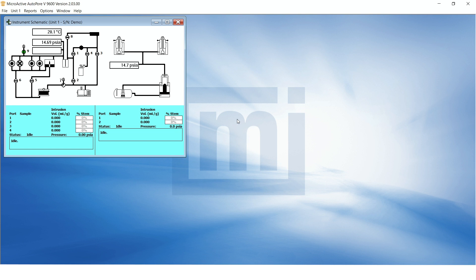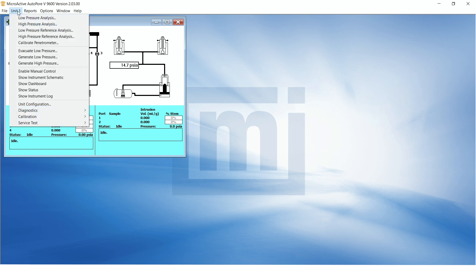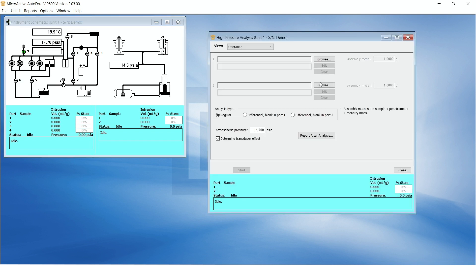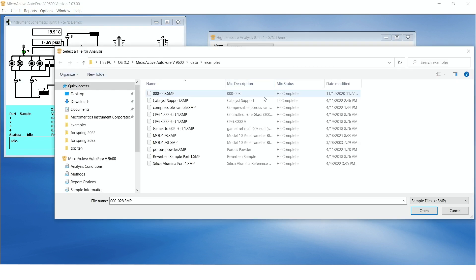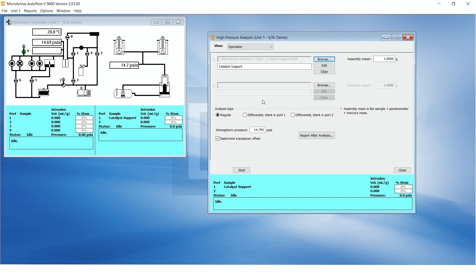Now we move back to the computer. High-pressure analysis is selected from the unit menu. We select the same sample information file and assign it to the high-pressure port one.